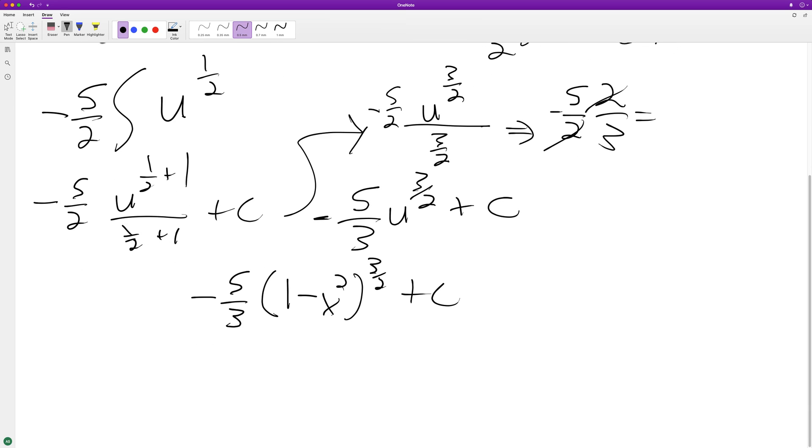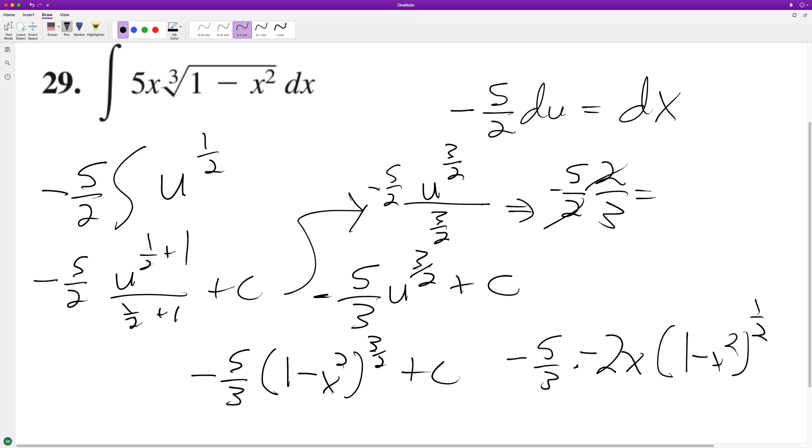So negative five thirds times negative two x times one minus x squared raised to the one half ends up being...